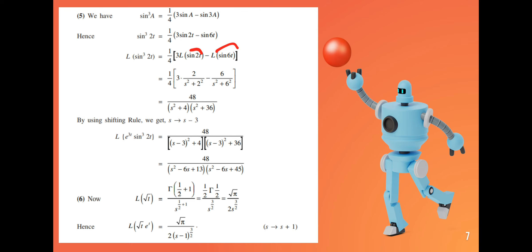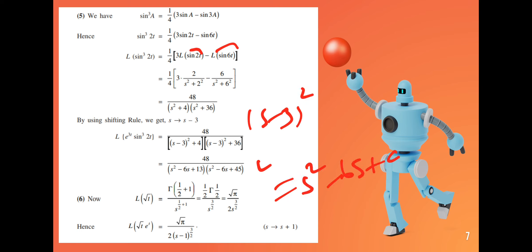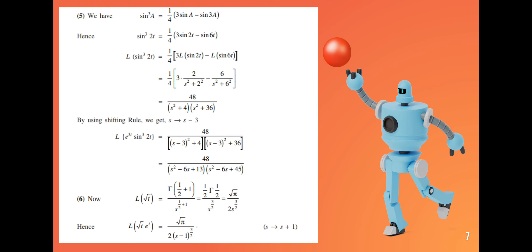For the Laplace transform of e^(3t) sin³(2t), apply the shifting property to the result for sin³(2t) by replacing s with s minus 3. Also, the Laplace transform of √t equals √π divided by 2s^(3/2), so the Laplace transform of e^t √t equals √π divided by 2(s minus 1)^(3/2).